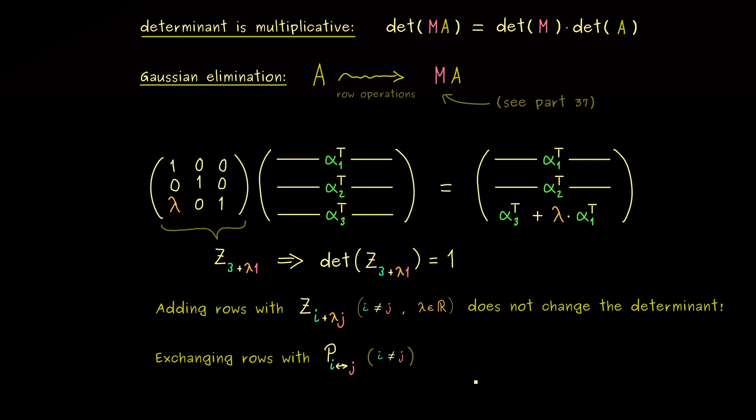Now, this is not so complicated to answer, because you can simply calculate the determinant of such a matrix P. And this is not so hard, because it has a lot of zeros, and then it turns out, it's always minus 1.